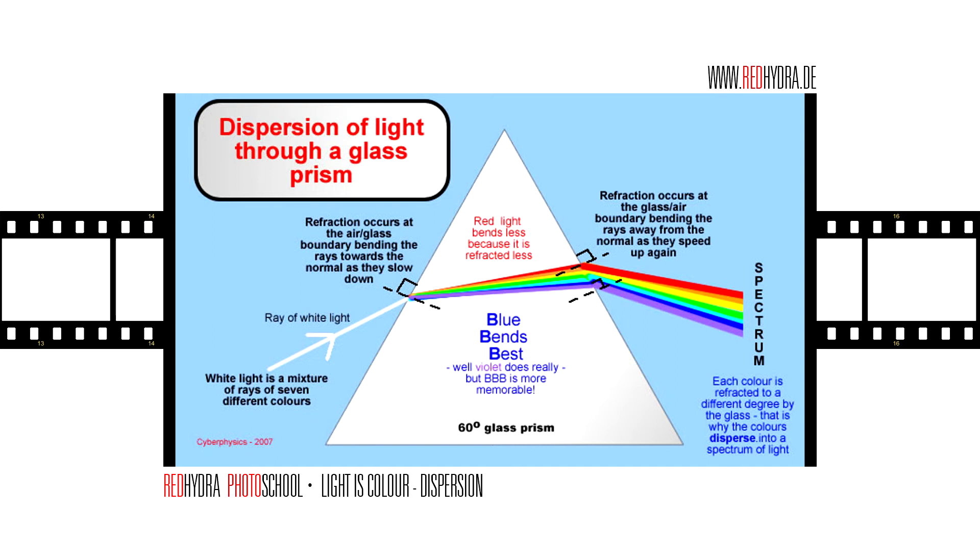Here you see white light comes from an angle, and refraction occurs at the air-glass boundary, bending the rays towards the normal as they slow down. Another refraction occurs at the glass-air boundary, bending the rays away from the normal as they speed up again.